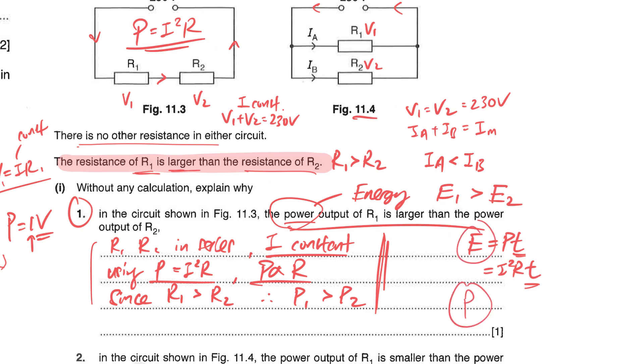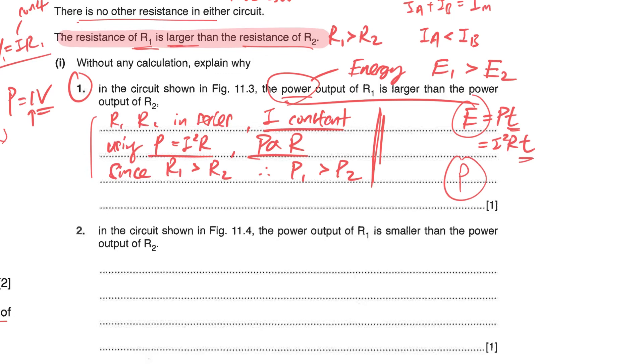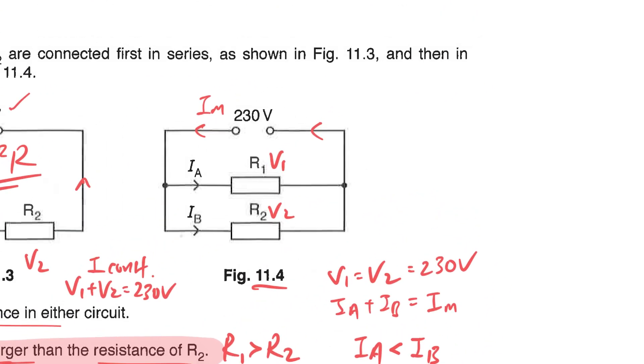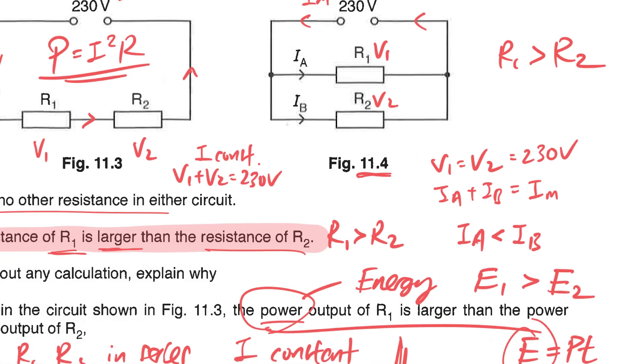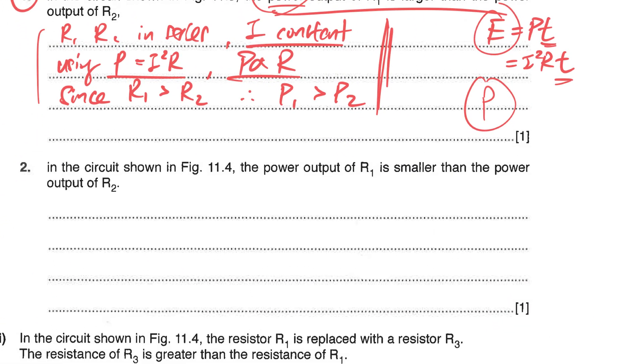Now for part two, it's referring to 11.4 where R1 and R2 are connected in parallel and still R1 is greater than R2. That's given in the question. For here they want you to explain why is it that the power of R1, power of one, is now smaller than the power of R2.